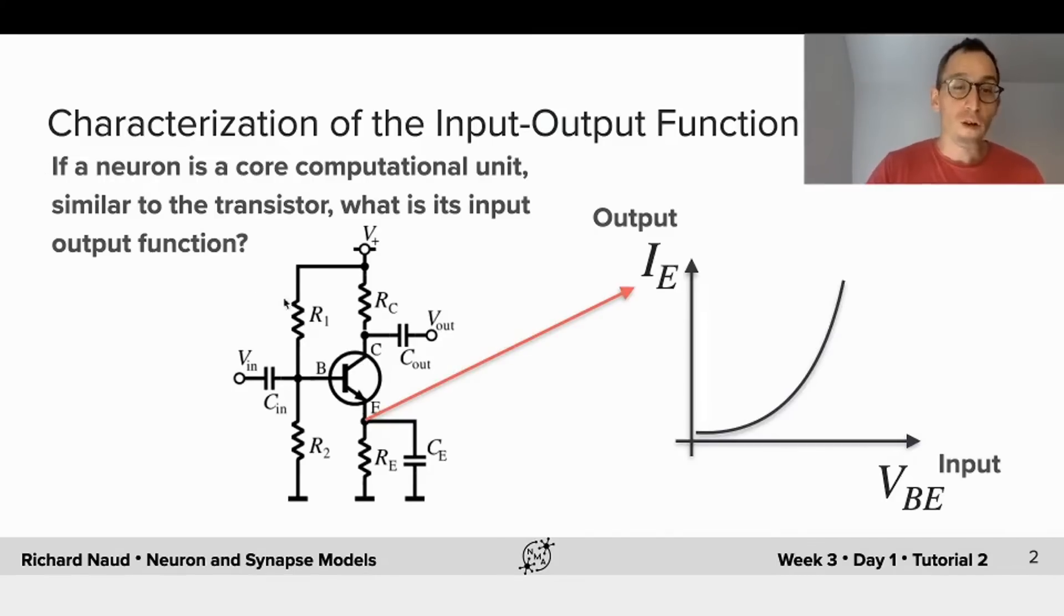For instance, a transistor will be understood in terms of the current flowing through as a function of the potential between the gates. Now, if a neuron is a core computational unit similar to the transistor, what is its input-output function?